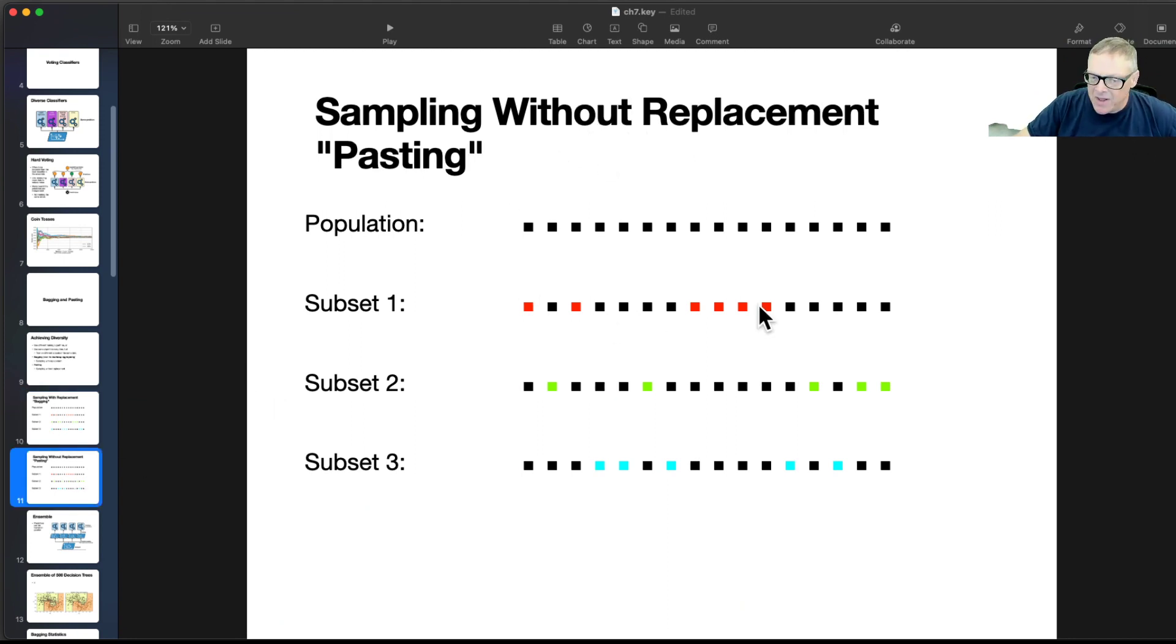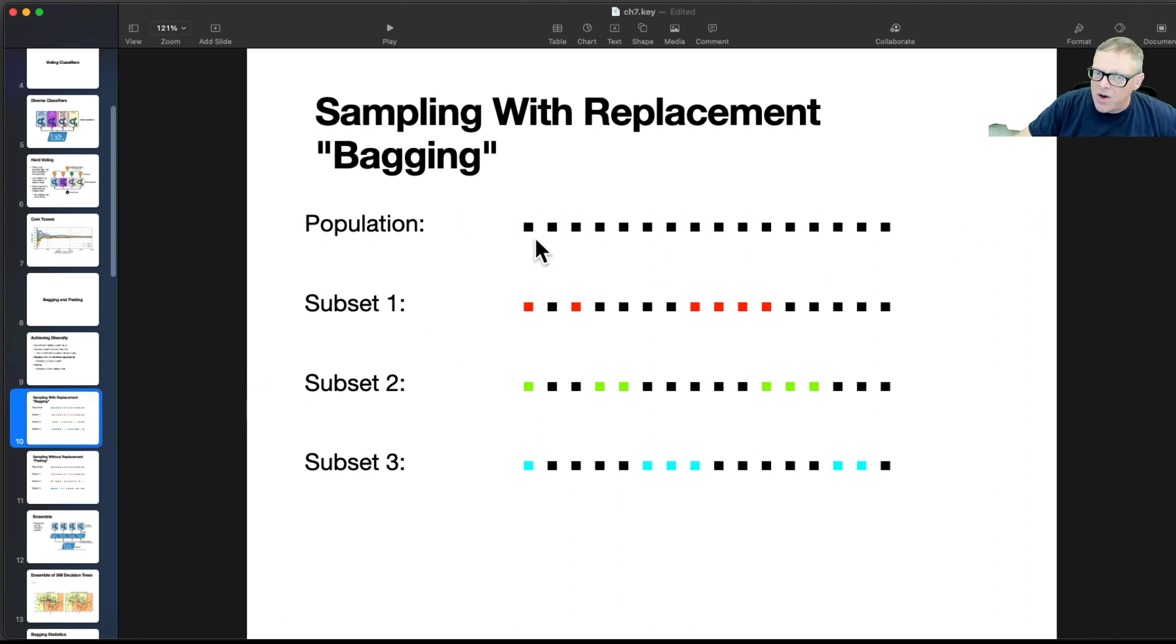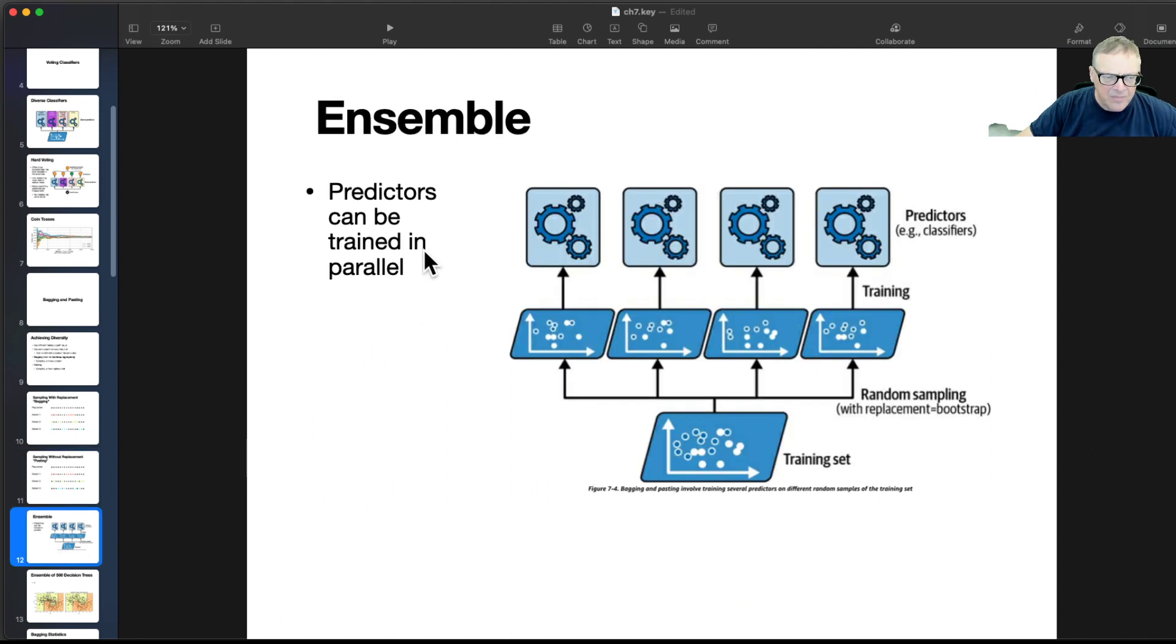Without replacement, you'll sample, and then you will never choose the same one twice, and anything you sample, you won't permit in the next subset. Although, I'm not sure I'm right about that. They might only be talking about multiple sampling, multiple draws of the same instance in the same subset. I'm going to take this slide out. I think I'm wrong about this. Because this would suggest that if I had 100 instances, and I was training 50, I could only make two subsets out of it. And I don't think that's true.